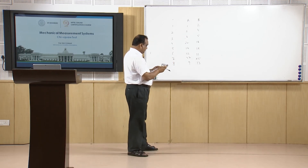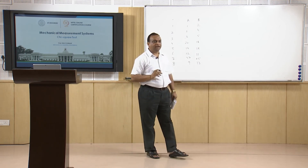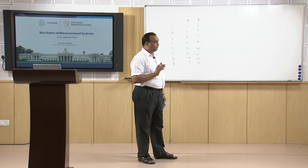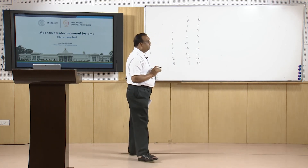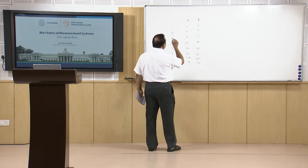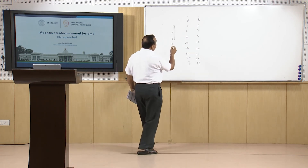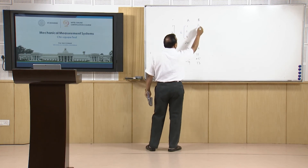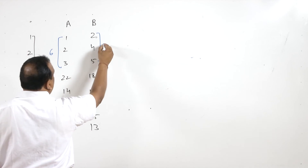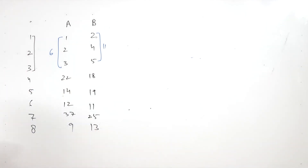An important rule in the chi-square test: the frequency should not be less than 5. Since the first few defect categories have frequencies below 5, we club the first three defect types together. When clubbed, the combined expected value becomes 6 and the observed value becomes 11.